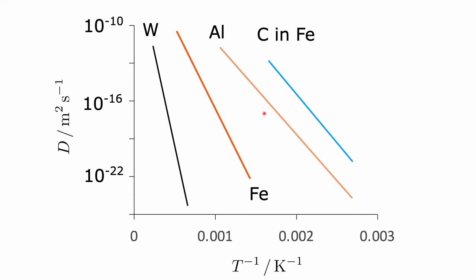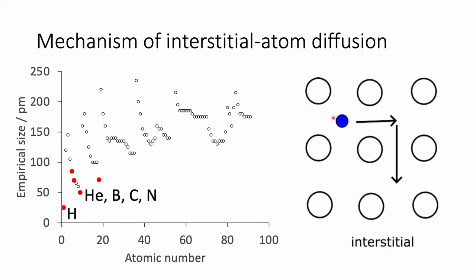One thing to notice is that the diffusion coefficient for carbon in iron is far greater at any given temperature than for all the other cases shown. So why does carbon diffuse so rapidly in iron compared with the diffusion of metal atoms inside metal?